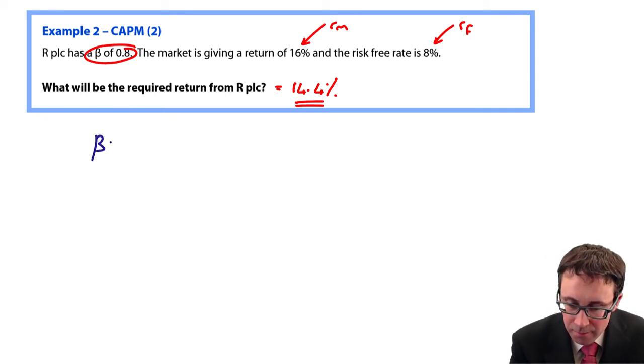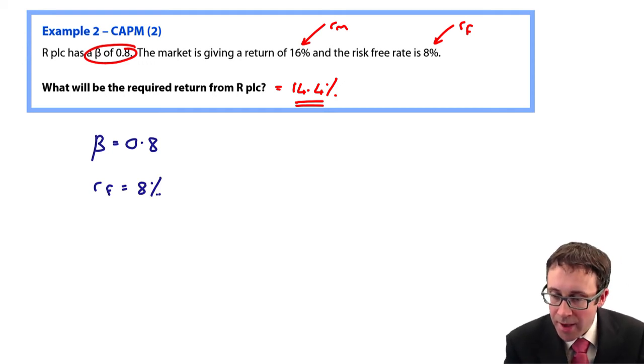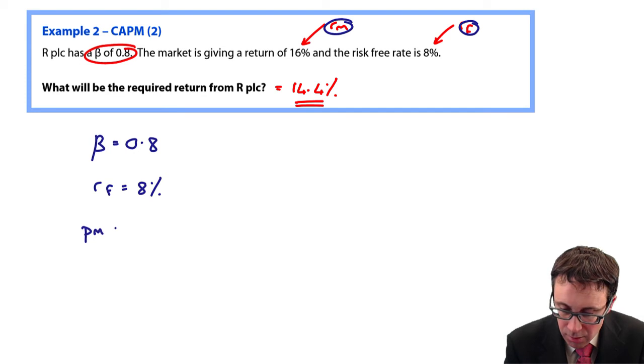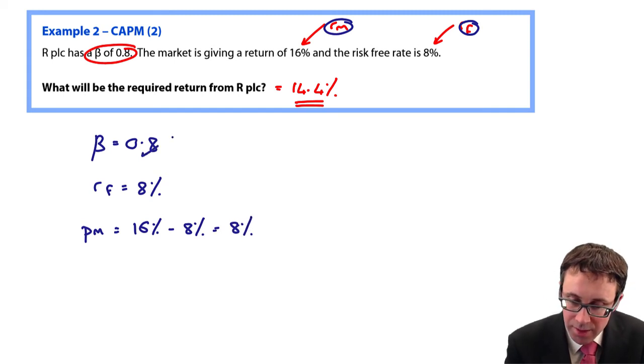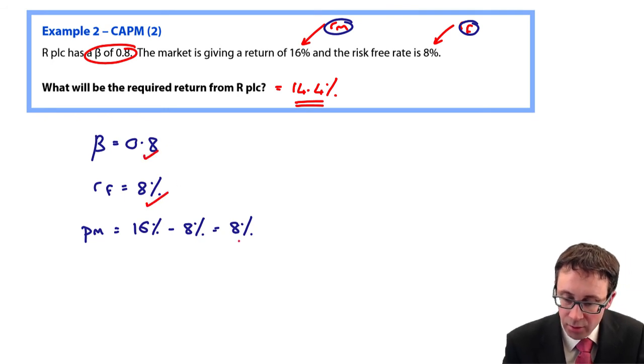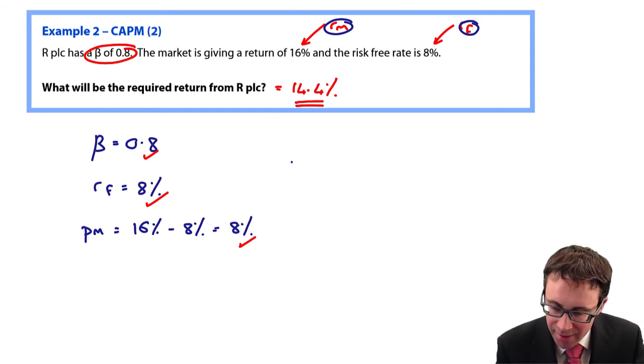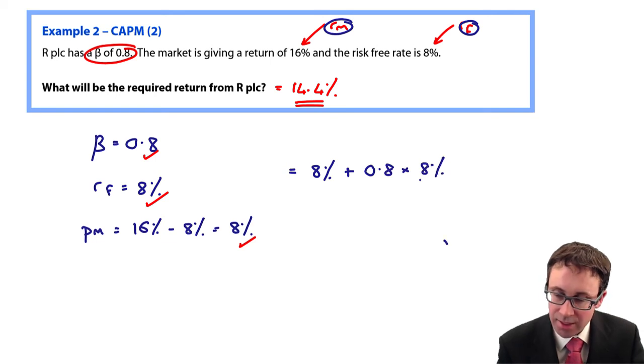So what you could be told within that question is imagine you've got beta again as 0.8, RF as 8%. Based upon this, the risk premium is the difference between the two. The premium is the 16 less 8, which is 8%. So you could be given beta at 0.8, RF at 8%, and the premium at 8% as well. So again, if that's the case, just be careful.